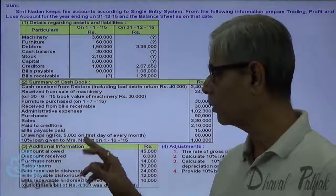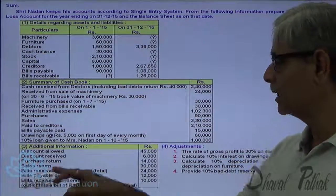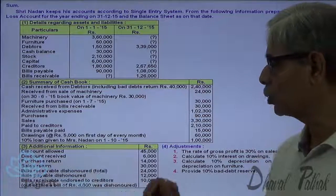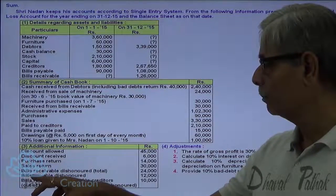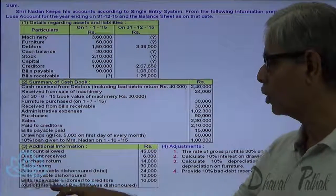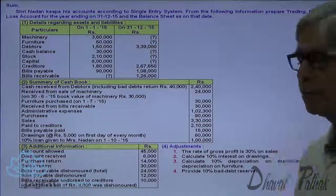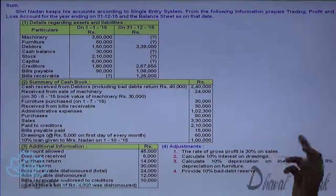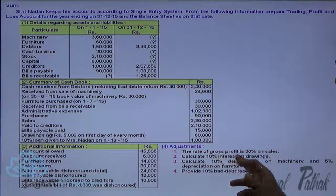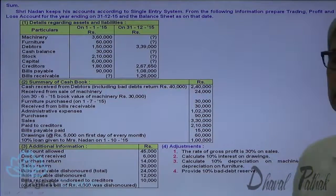Additional information includes: discount allowed, discount received, purchase return, sales return. Bills receivable dishonored in total, bills payable dishonored, and bills receivable endorsed to creditors, out of which bills of Rs. 4,000 were dishonored. Adjustments: rate of gross profit is 30% on sales; calculate 10% interest on drawings; calculate 10% depreciation on machinery and 5% on furniture; provide 10% for bad debt reserve.